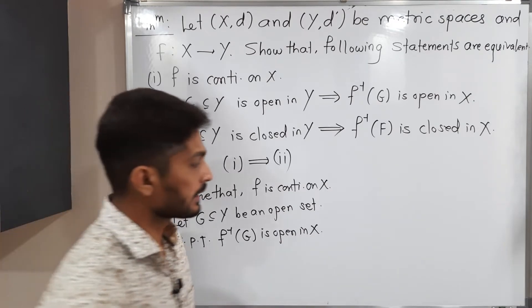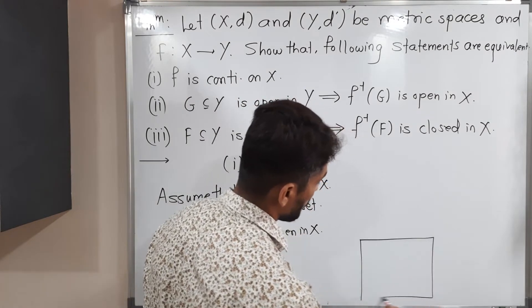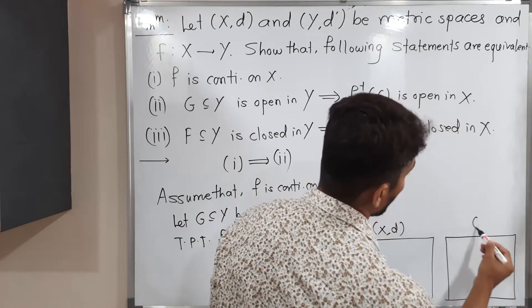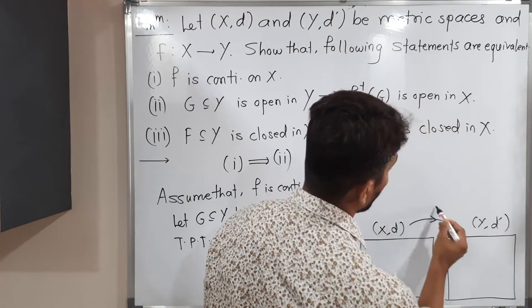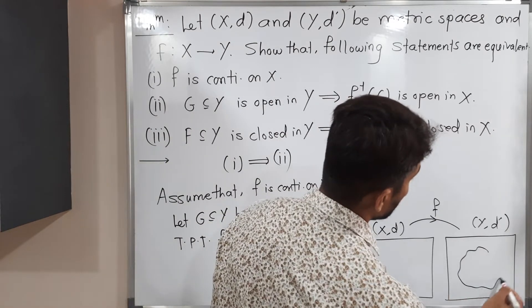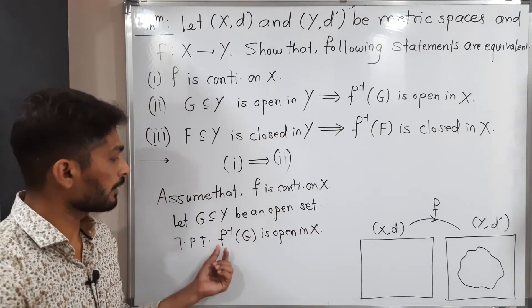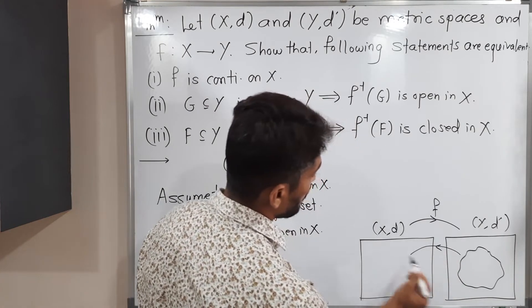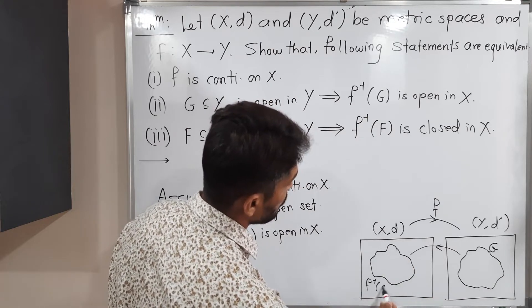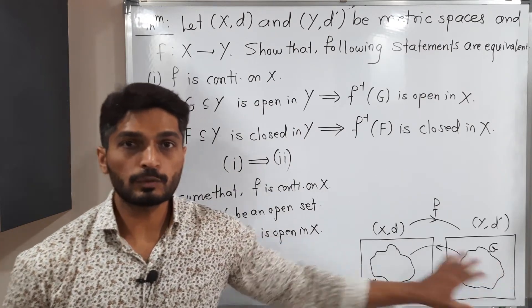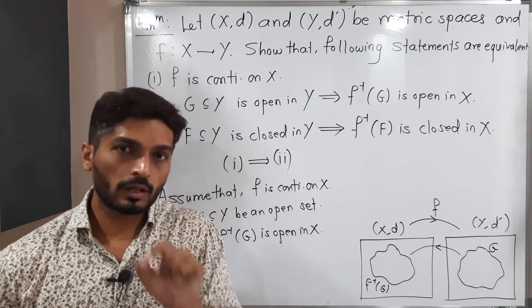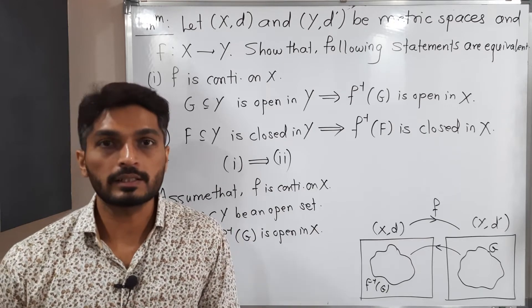I will draw a diagram so you can clearly understand. Suppose this is metric space (X, d) and here we have another metric space (Y, d'). We have a function f from X to Y. We have considered G to be an open subset of Y, and we have to prove that f inverse of G — that means its inverse image — is open in X.